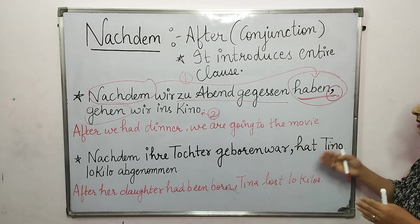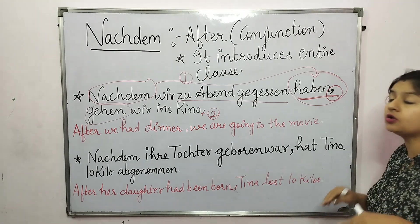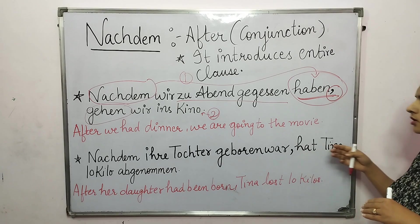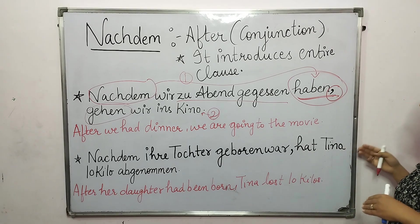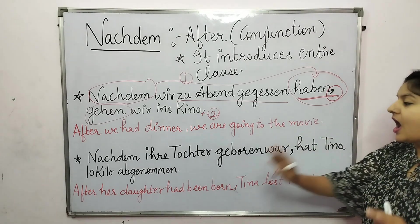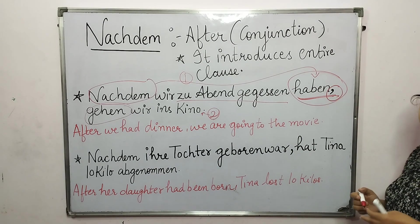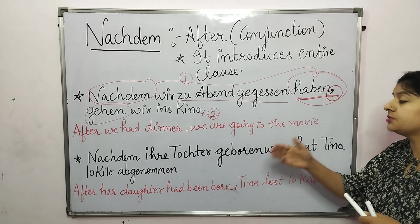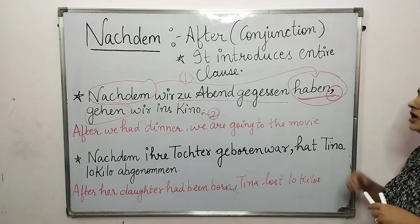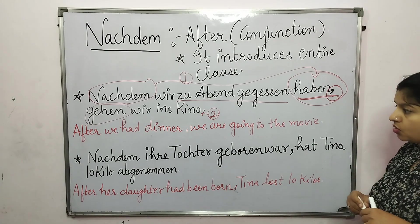Another example: 'Nachdem ihre Tochter geboren war, hat Tina zehn Kilo abgenommen.' After her daughter had been born, Tina lost 10 kilos. Again, because nachdem is a conjunction, the verb goes to the end of the Nebensatz, and after the comma in the Hauptsatz the verb comes first.